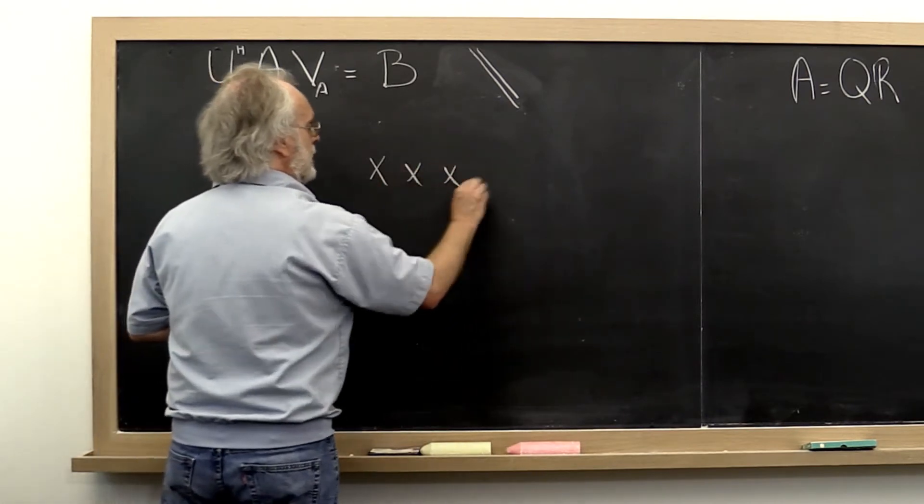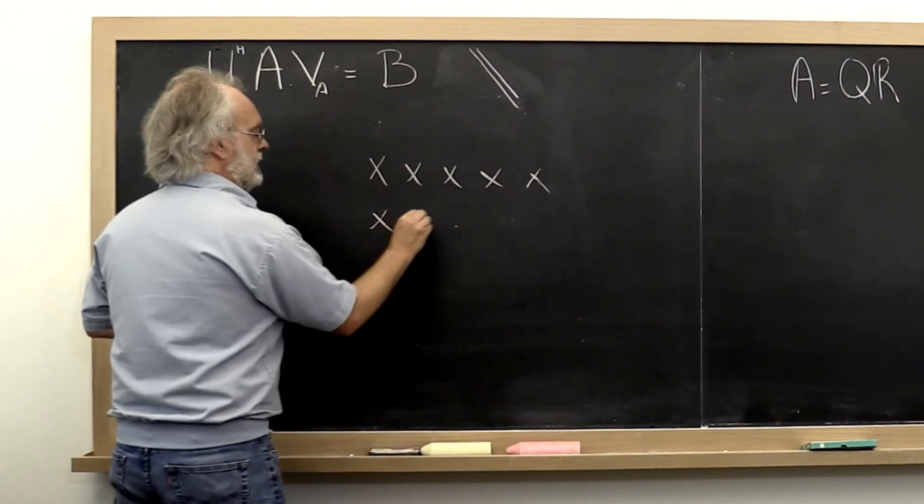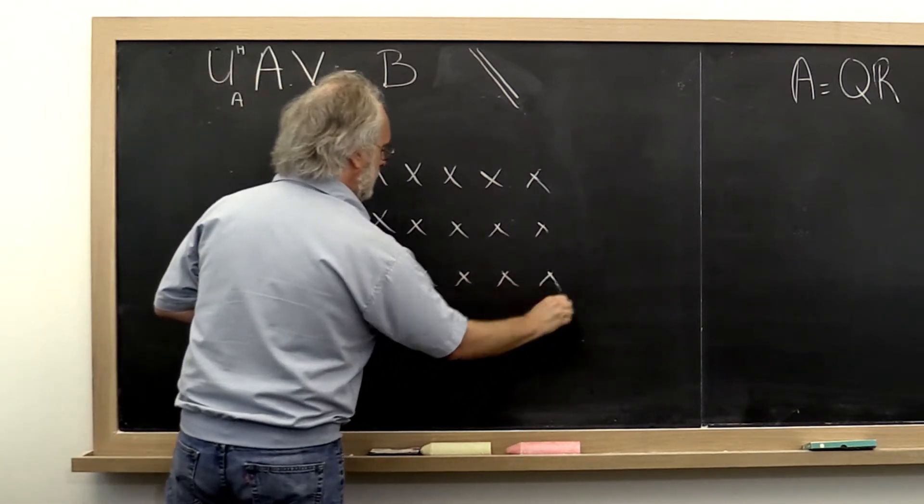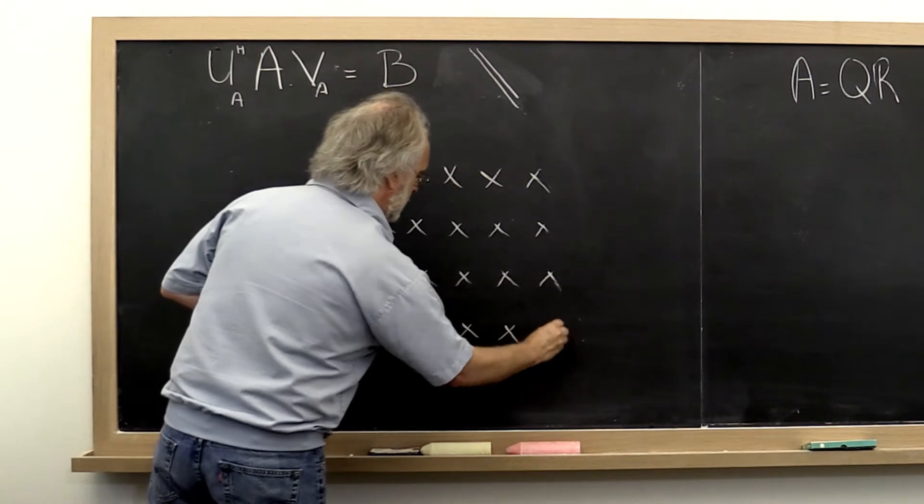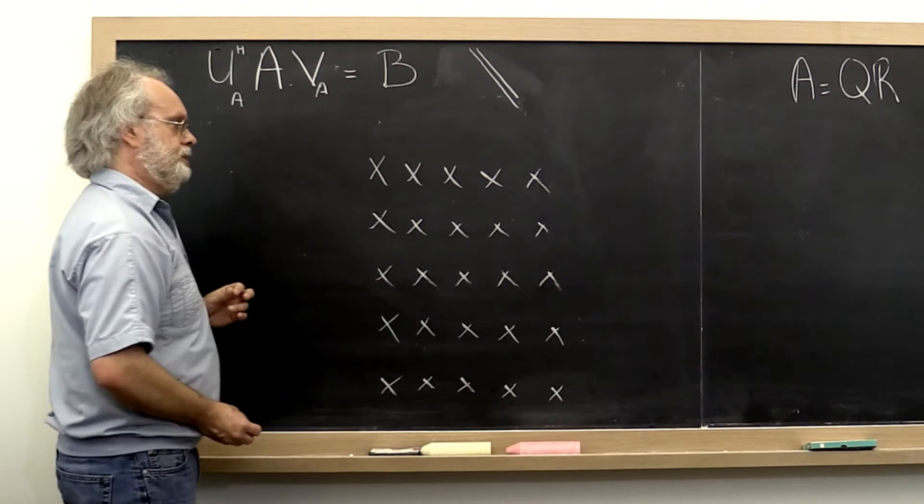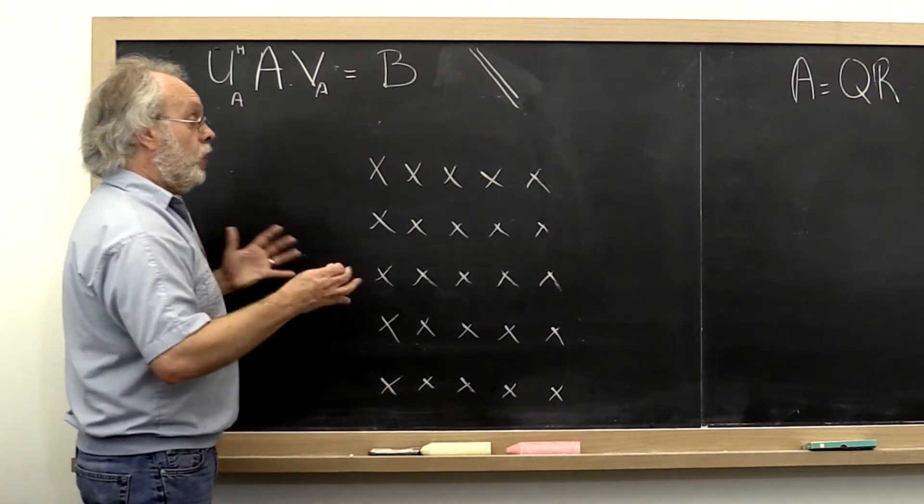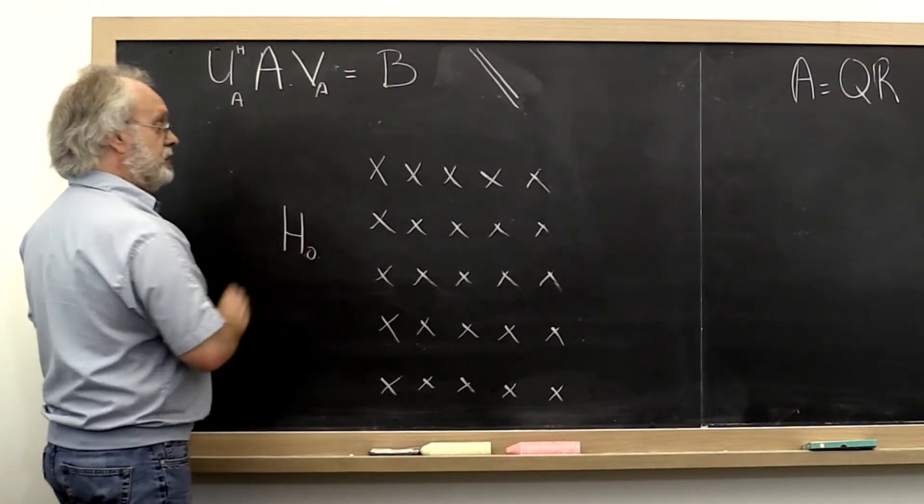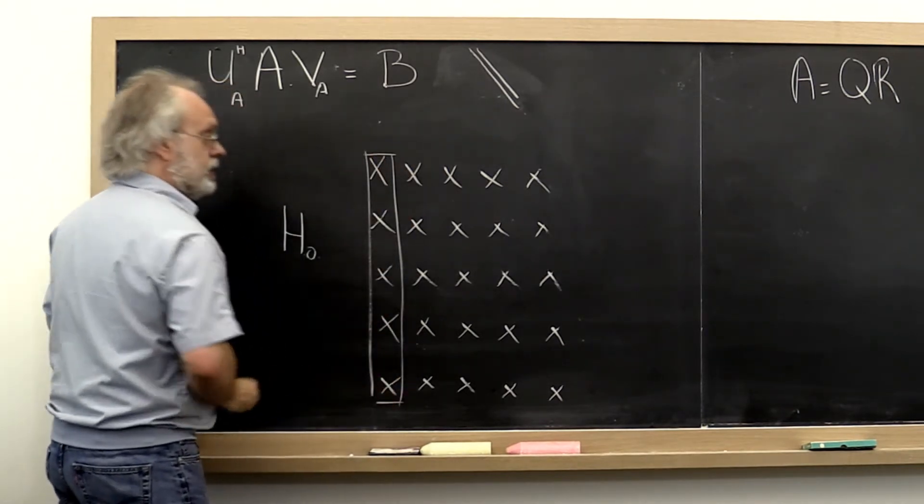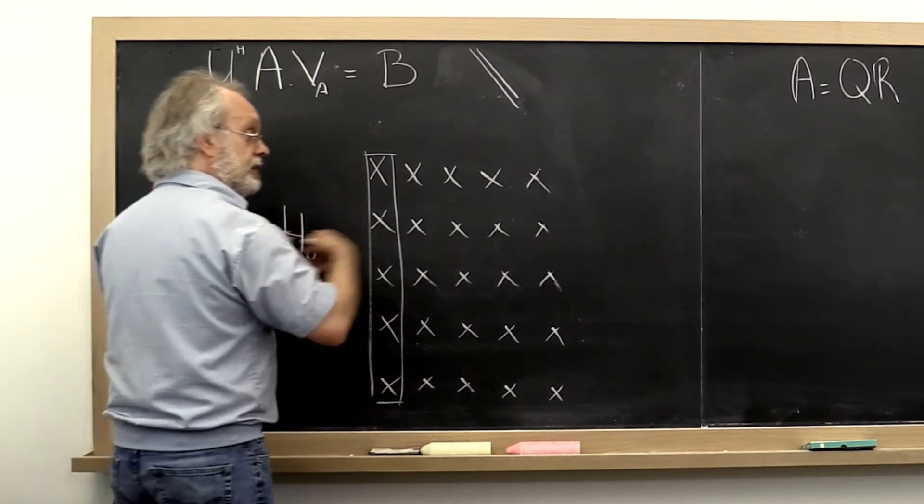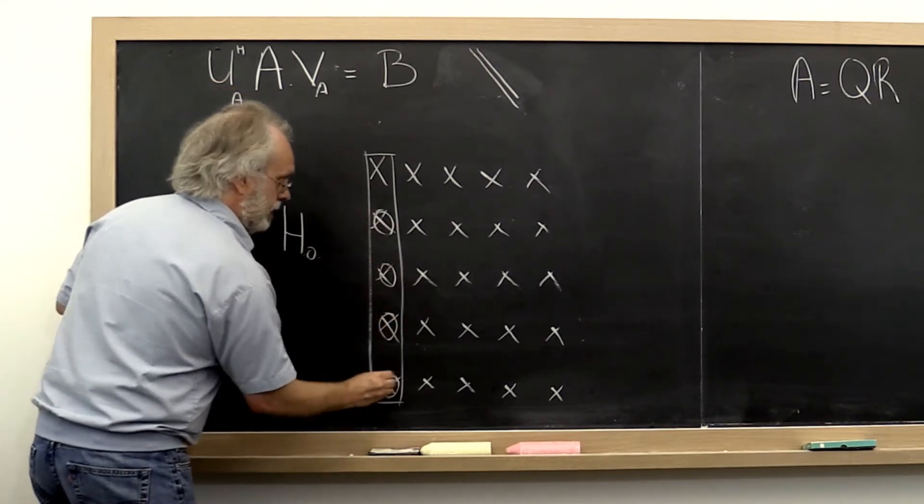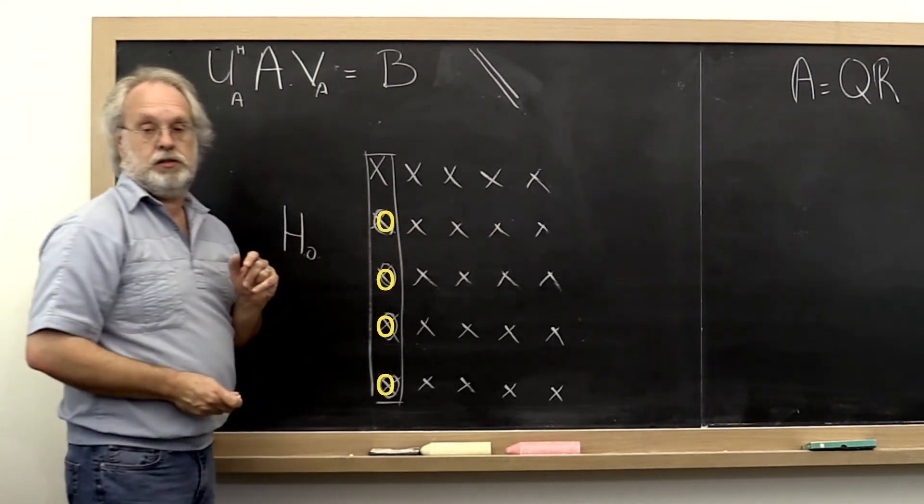Well, let's let this represent our matrix. We know how to compute a Householder transformation, H0, from this first column right here, such that when we apply it from the left to the entire matrix, these elements become zero and then the rest of the elements change appropriately. We saw that already when we talked about using Householder transformations to compute the QR factorization.